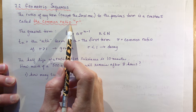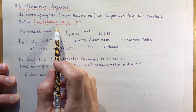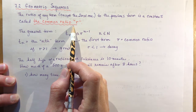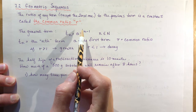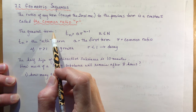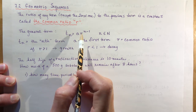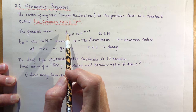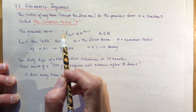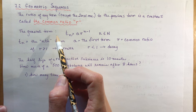With arithmetic sequences we had a common difference value, and with geometric sequences you have a common ratio. Ratio means when you divide the second term by the first term you get the same number — if you divide the third by the second, or the fourth by the third, or the 20th by the 19th.